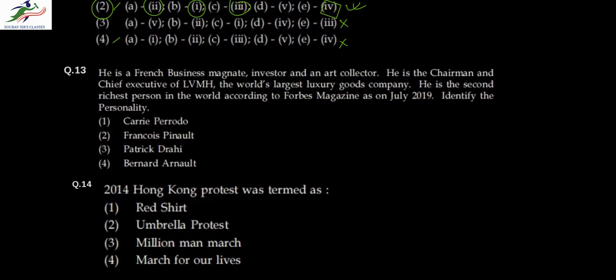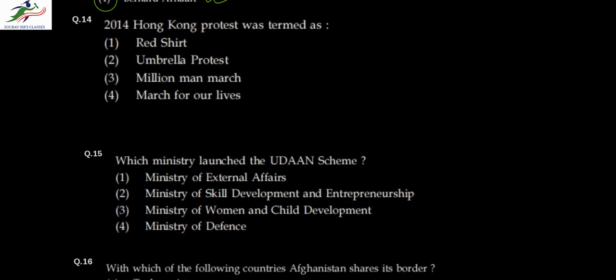Question thirteen: he's a French business magnate, investor, and art collector. He's the chairman and CEO of LVMH — Louis Vuitton — the world's largest luxury goods company. He was the second richest person in the world according to Forbes magazine as of July 2019. If you know any of these clues, you can identify the personality — it is Bernard Arnault. Question fourteen: the 2014 Hong Kong protest was popularly known as the Umbrella Protest, which was very much in the news in those days.